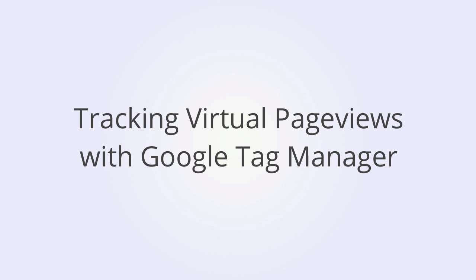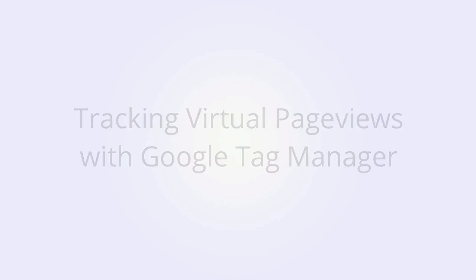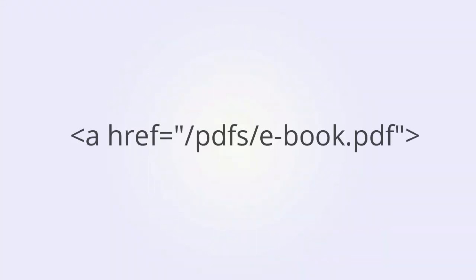Earlier on, we looked at several types of user interactions that don't cause the page to reload and that we might therefore want to track as either events or virtual page views. So now we'll look at virtual page views through Google Tag Manager. Let's say we want to track all PDF clicks as virtual page views. When we're setting up our virtual page view tag, we are going to take advantage of the href value or element URL as both the rule and as the value we're passing in for our virtual page view.